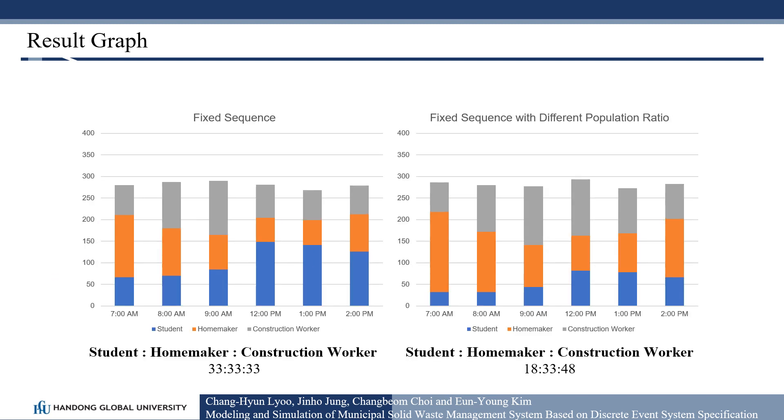This time, we experimented with fixed sequence using a different population composition. At 7 am, the number of complaints from students was the lowest, and the number of complaints from the homemakers was the highest. At 12 pm, students and construction workers filed the most complaints. Overall, the total number of complaints was the highest at 12 pm and the lowest at 1 pm.